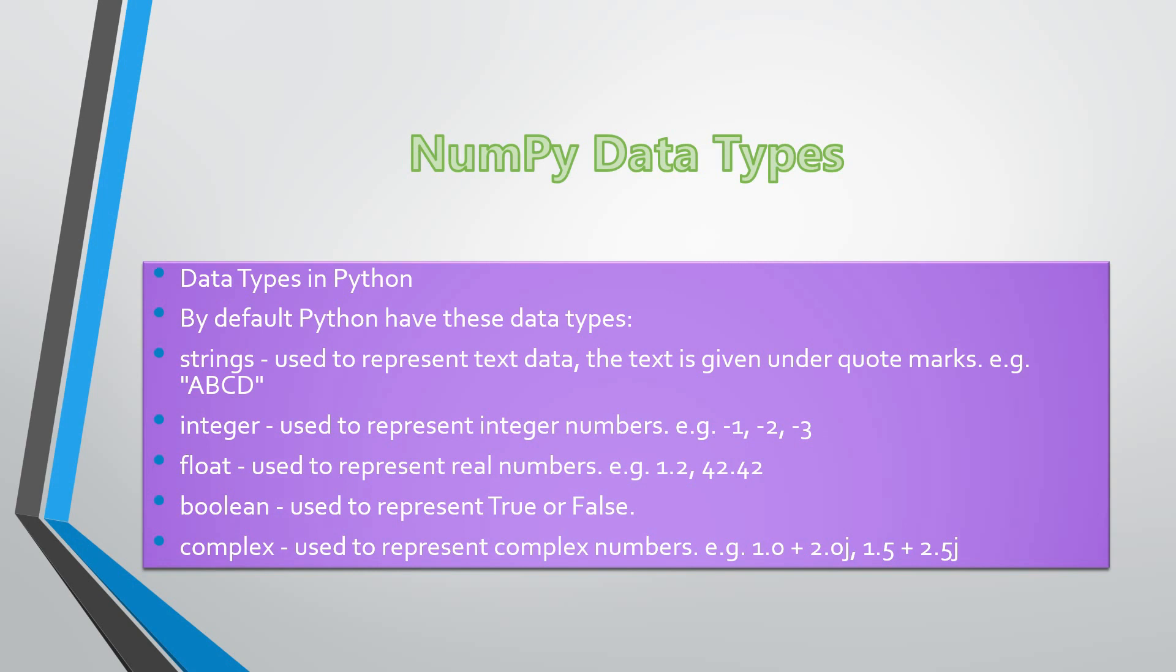And the floating point will be defined between 1.2, 42.2. I have given you an example. Then the boolean will be defined with true or false, and a complex number will be defined in the format 1 plus 2j or 1.5 plus 2.5j.